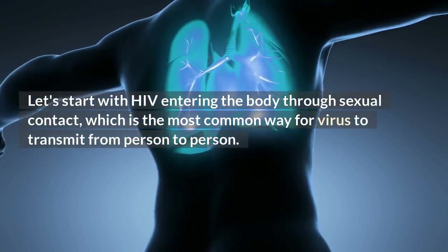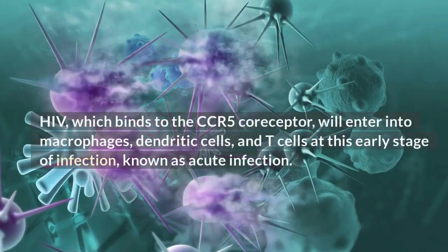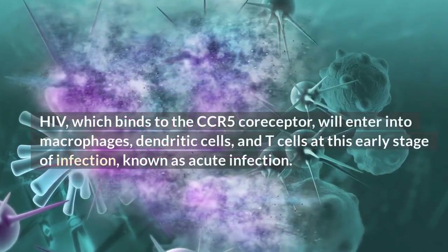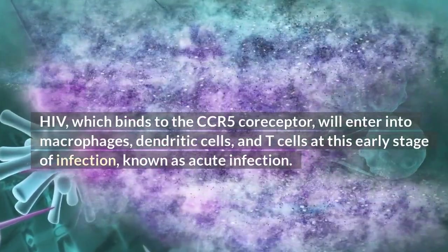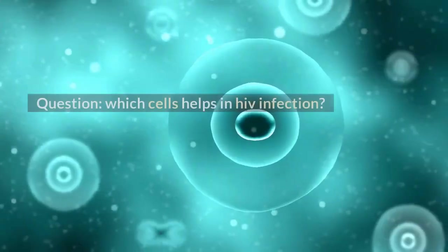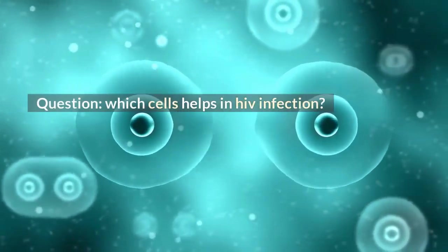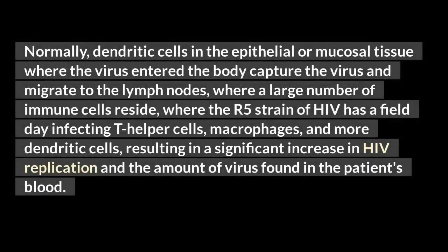HIV, which binds to the CCR5 co-receptor, will enter into macrophages, dendritic cells, and T cells at this early stage of infection, known as acute infection. Normally, dendritic cells in the epithelial or mucosal tissue where the virus entered capture the virus and migrate to the lymph nodes, where a large number of immune cells reside. There the R5 strain of HIV has a field day infecting T helper cells, macrophages, and more dendritic cells, resulting in a significant increase in HIV replication and the amount of virus in the patient's blood.